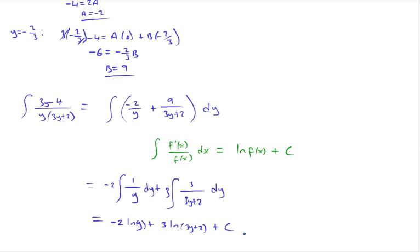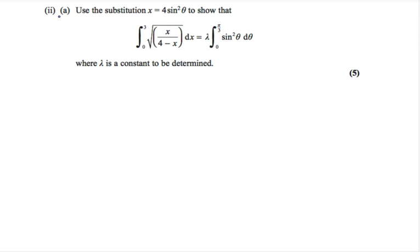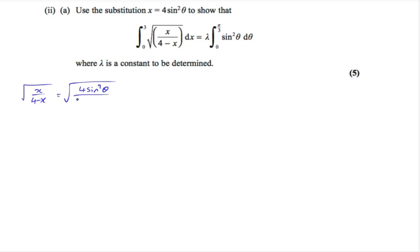Part 2a says: use the substitution x equals 4 sin²θ to show that the integral equals lambda times the integral of sin²θ dθ, where lambda is a constant to be determined. We need to rewrite the integrand √(x/(4-x)) and dx in terms of θ. Substituting: √(4sin²θ / (4 - 4sin²θ)).